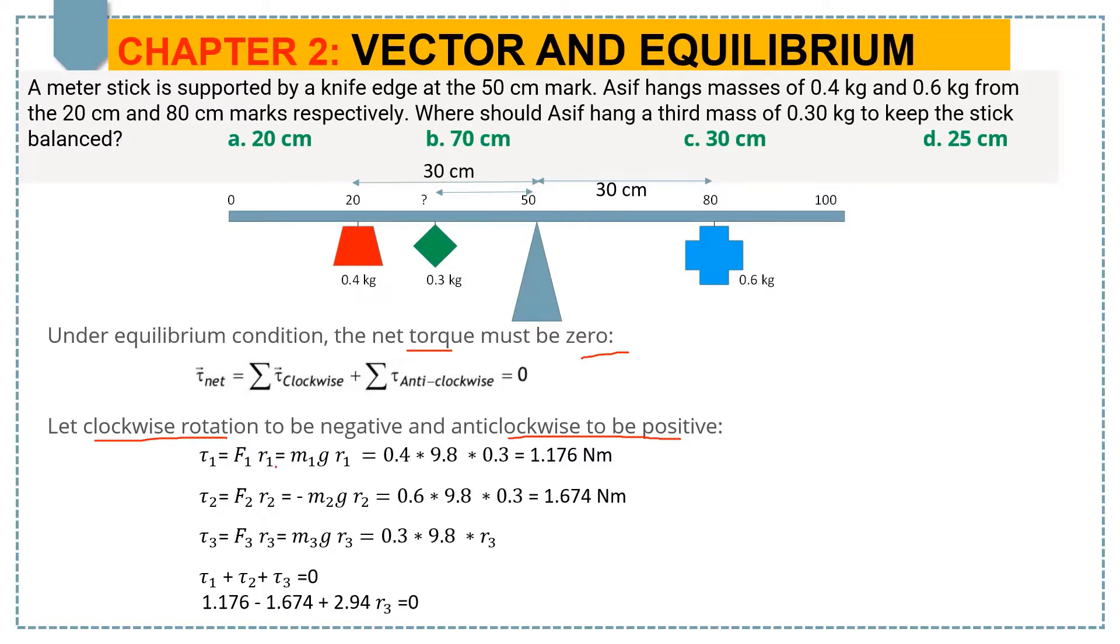τ₁ = F₁R₁ = m₁gR₁, where m₁ = 0.4, g = 9.8, and R₁ = 0.3 meters.